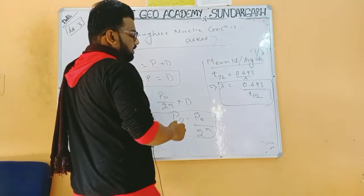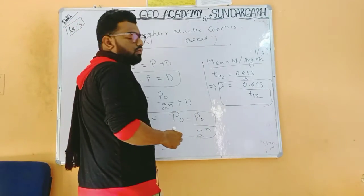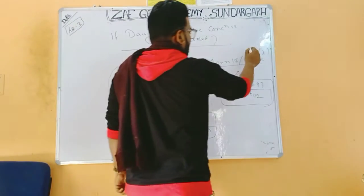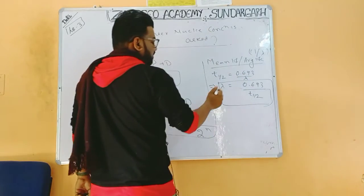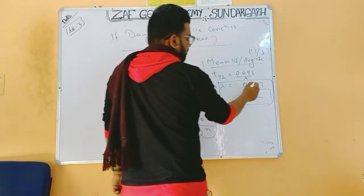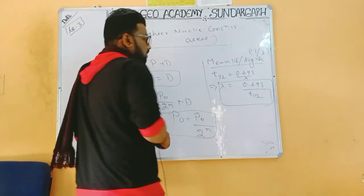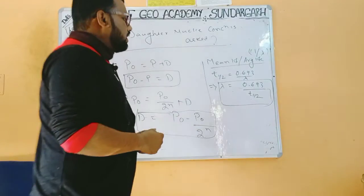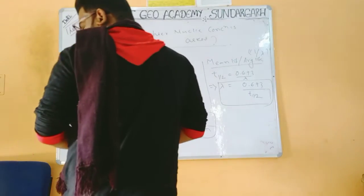The mean life or average life is equal to 1/λ. We also have t½ = 0.693/λ, or equivalently λ = 0.693/t½. From these relations we can calculate the average life or mean life.